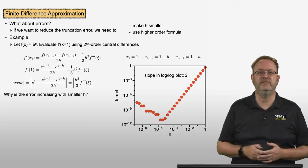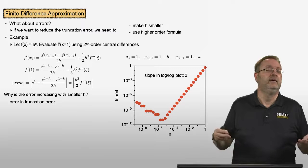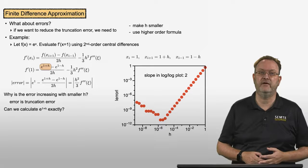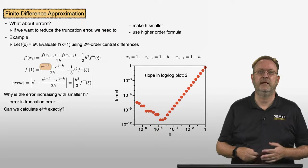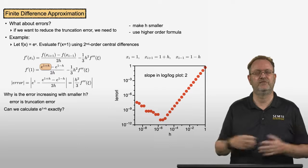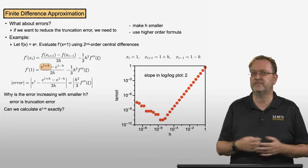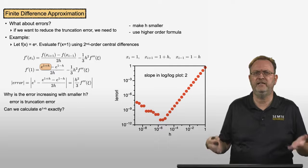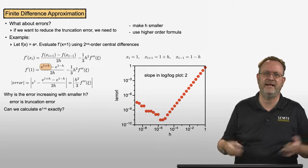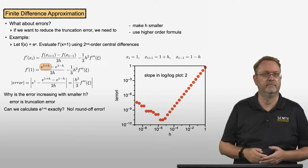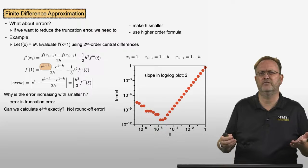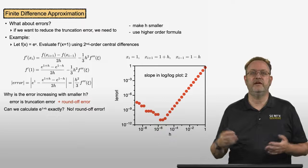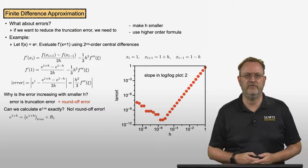Why is the error increasing with smaller h? That's because the error is not only the truncation error — it's the truncation error plus something else. And that something else is round-off error. Can we evaluate e^(1+h) exactly? No, because we have round-off error. So the total error is truncation error plus round-off error.